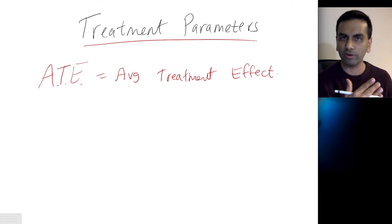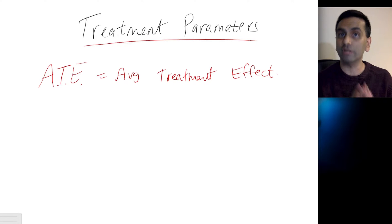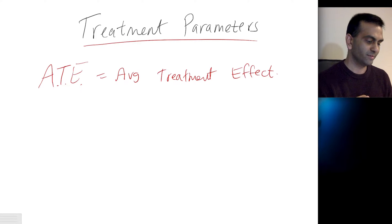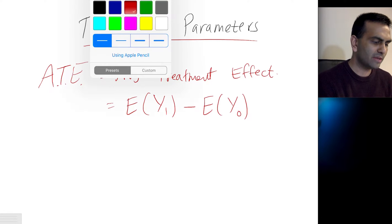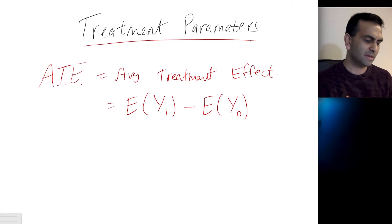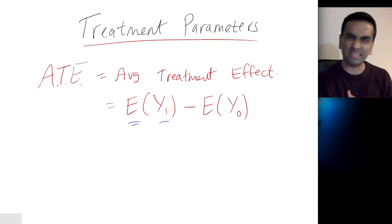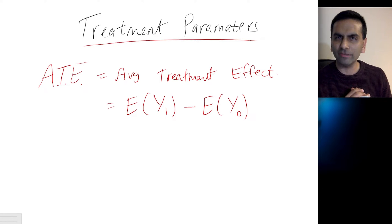The ATE is the vocab word for the causal impact of the treatment. The formula for it is the expected Y1 minus the expected Y0. This just means the expected value of the thing inside the parentheses — so what we're expecting Y1 to be minus what we're expecting Y0 to be.